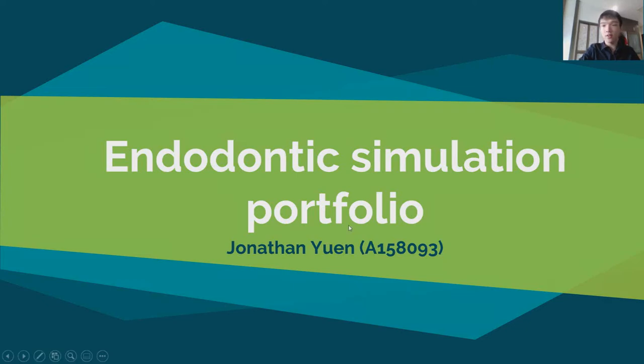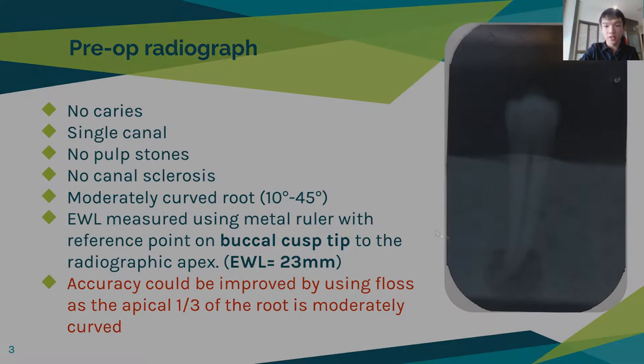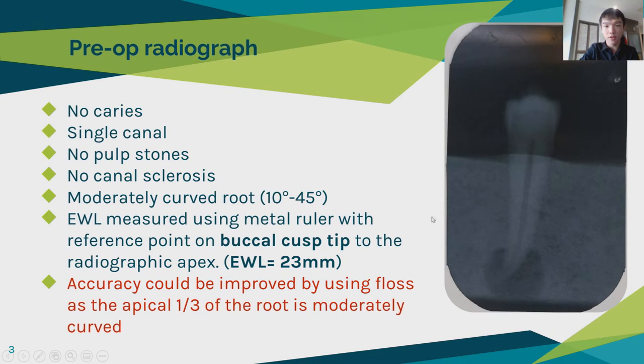Good day, doctor. Today for my endodontic simulation portfolio, I'll be using Tooth 44 with normal crown morphology and no caries for the pre-op radiograph, allowing me to highlight that the root is moderately curved and the estimated working length was 23 mm.